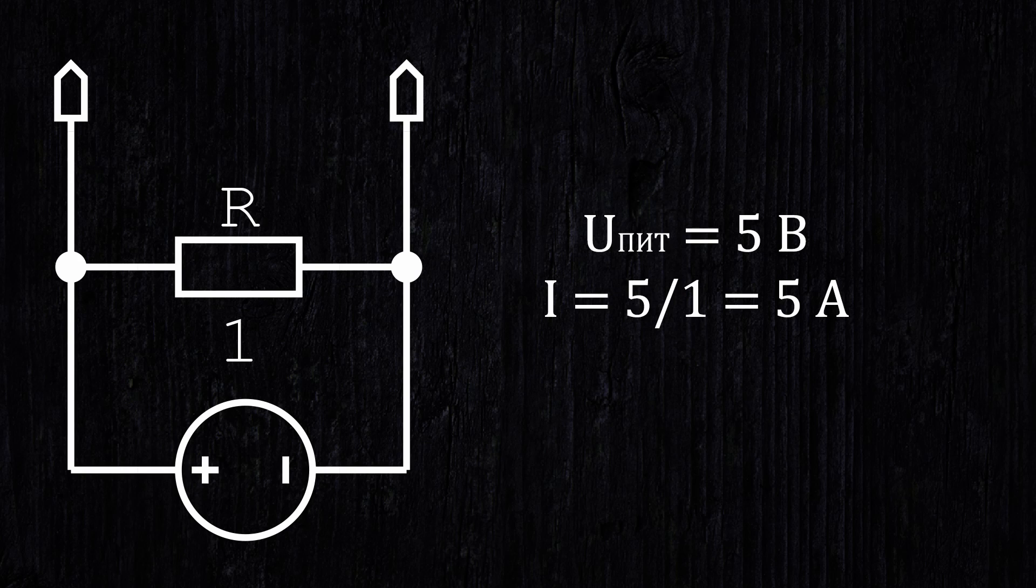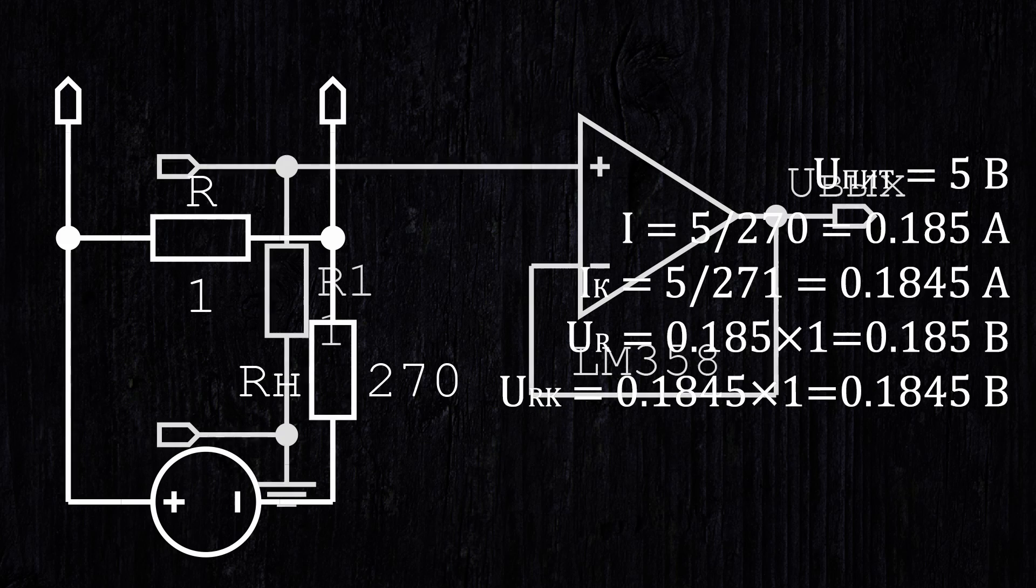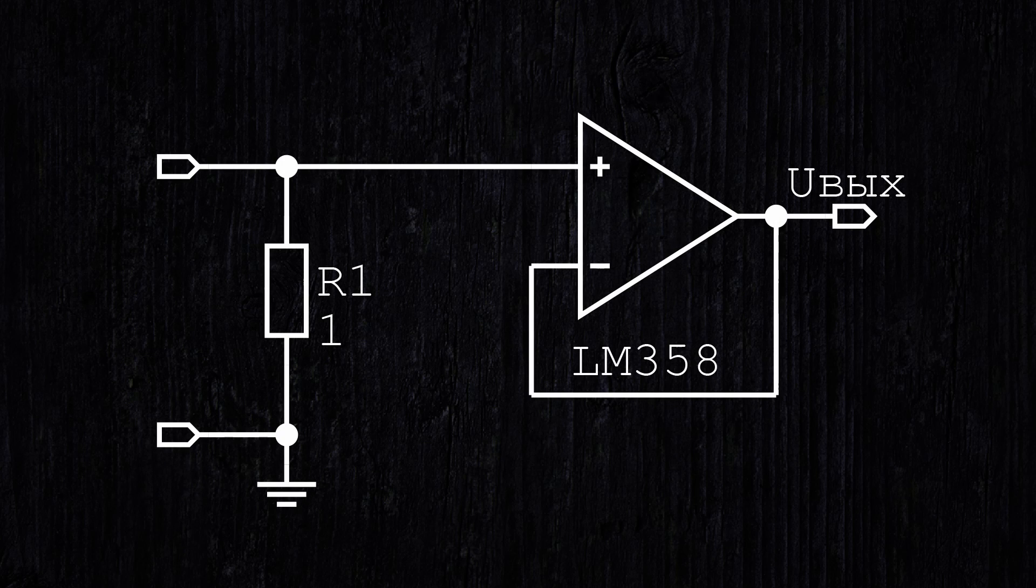the current flowing through the resistance creates a certain voltage drop across it. For example, we connect some load through one ohm resistor. When current flows through the resistor, we have a voltage drop across it and we need to measure this voltage. It is clear that in order to get a voltage drop of one volt, you need a current of one ampere, and for a current of one milliampere, we get only one millivolt.